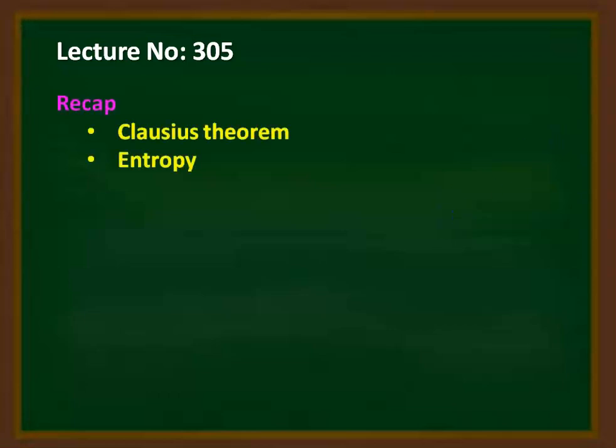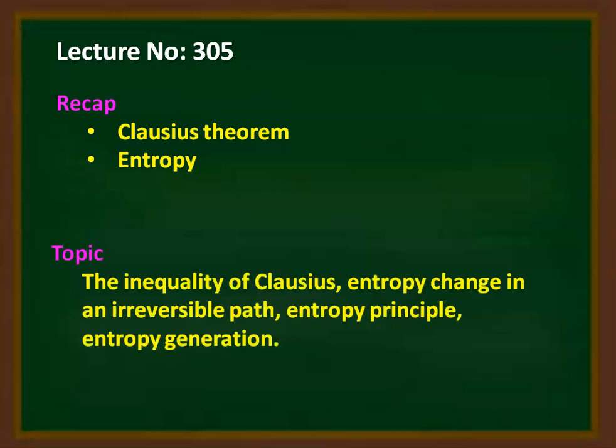We recap from the previous lecture. In the previous lecture 304, we discussed the Clausius theorem and we defined the property entropy, and we proved that entropy is a point function and property of the system. In this lecture, we are going to discuss the inequality of Clausius, entropy change in an irreversible path, entropy principle, and entropy generation.